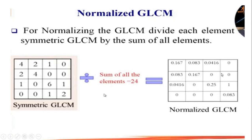Now we find the normalized GLCM. To normalize, we divide each element of the symmetric GLCM by the sum of all its elements. The sum of all elements of the symmetric GLCM equals 24. So dividing each element by 24 gives the normalized GLCM — for example, 4 divided by 24 equals 0.167, and 2 divided by 24 equals 0.083.